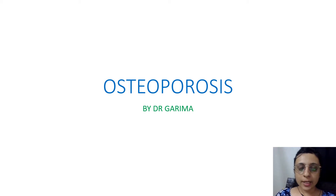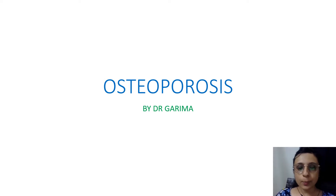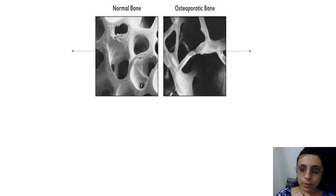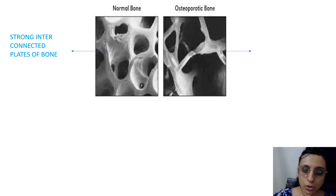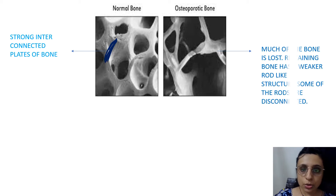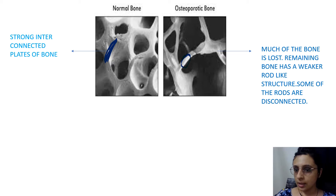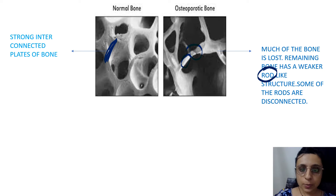Hello everyone, today we will be taking a very important topic — osteoporosis — and we will cover this entire topic in a quick bit. As the name suggests, it is the porous nature of the bone. In the normal bone you can appreciate these strong interconnected plates, whereas in the osteoporotic bone you can see very weak and very thin rod-like structures, disconnected at places.